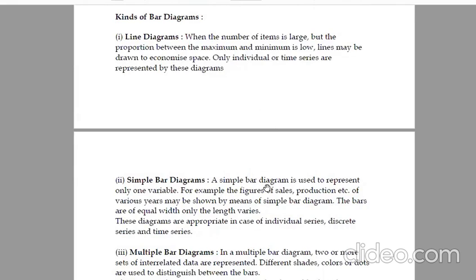Second diagram, simple bar diagram. A simple bar diagram is used to represent only one variable. For example, the figures of sales, production, etc. of various areas may be shown by means of simple bar diagram. The bars are of equal width. Only the length varies. These diagrams are appropriate in case of individual series, discrete series, and time series.